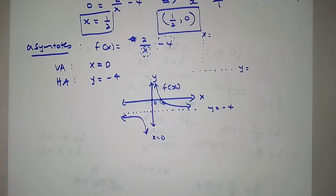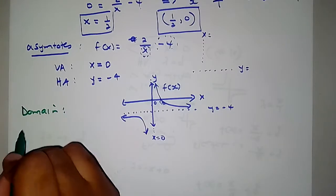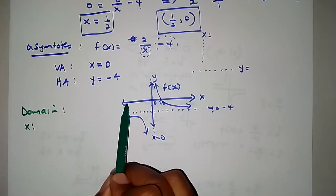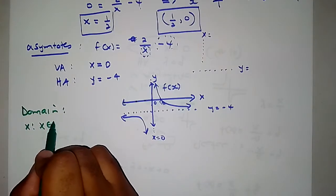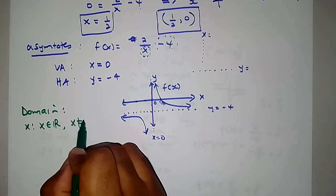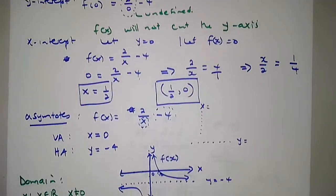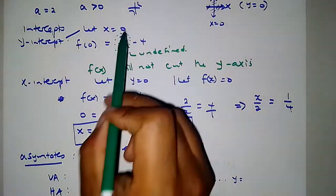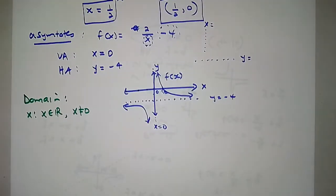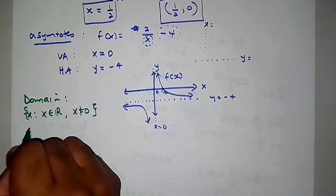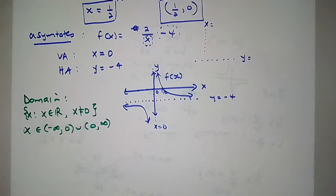What is the domain of this function? x is an element of real numbers. However, x cannot equal 0 because the function is not defined there — when we tried to put x equals 0 in the function, it was undefined. That is why for the domain, x is not supposed to equal 0. You can write it either way — whichever helps you.